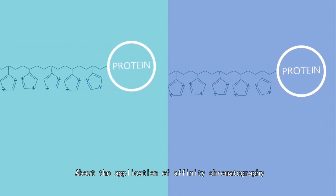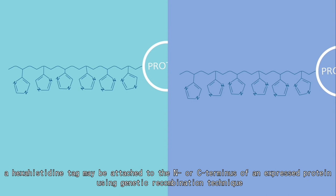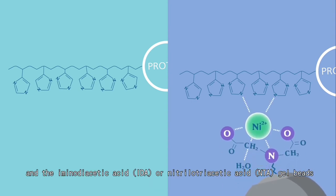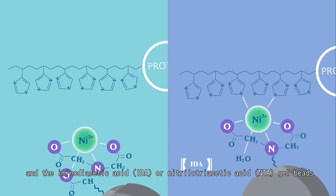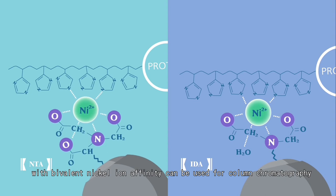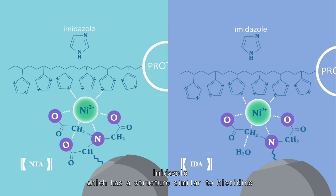About the application of affinity chromatography: a hexahistidine tag may be attached to the N or C terminus of an expressed protein using genetic recombination technique. And the iminodiacetic acid (IDA) or nitrilotriacetic acid (NTA) gel beads with bivalent nickel-ion affinity can be used for column chromatography.